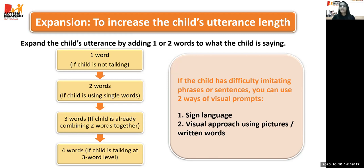If the child has difficulty imitating phrases or sentences, we can use two types of visual prompts. The first is sign language — for example, for the sentence 'I want eat,' we can use sign language as a visual prompt. The second is a visual approach using pictures — printouts, drawings, or real people's pictures. For example, for 'mama eating cookie,' get the child to point at mama's picture, then eating, then cookie, so the pictures serve as a visual prompt. You can also use written words if the child is able to read.